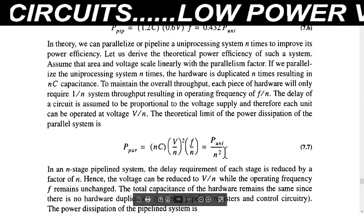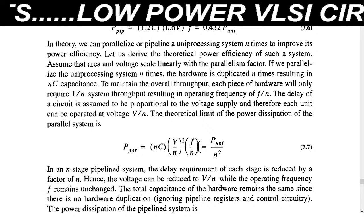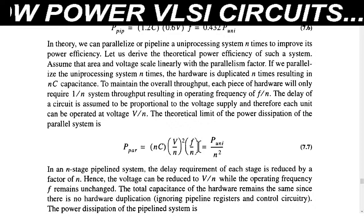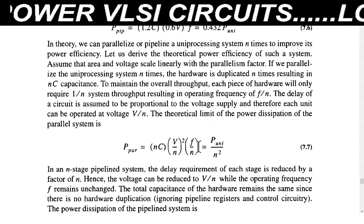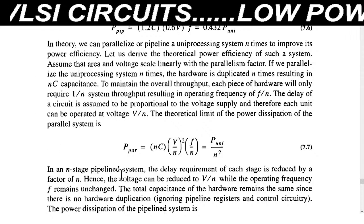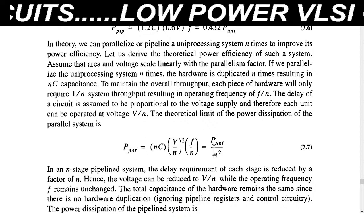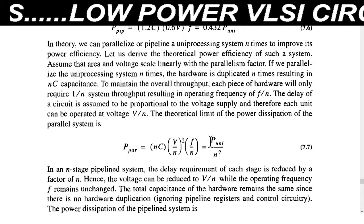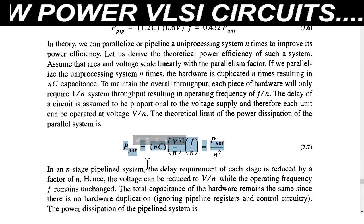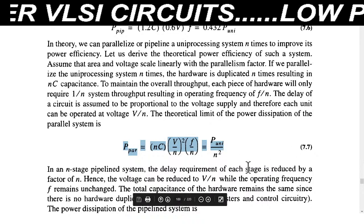The overall power dissipation — which is dynamic power consumption — will be given by a generalized equation. We have already discussed that power consumption is of two types: dynamic and static; dynamic is divided into switching and short-circuit. This falls under switching power. In the case of parallel processing, if the power dissipation without parallelism is P_uni, then after parallel processing the overall power dissipation P_par equals P_uni divided by n squared.